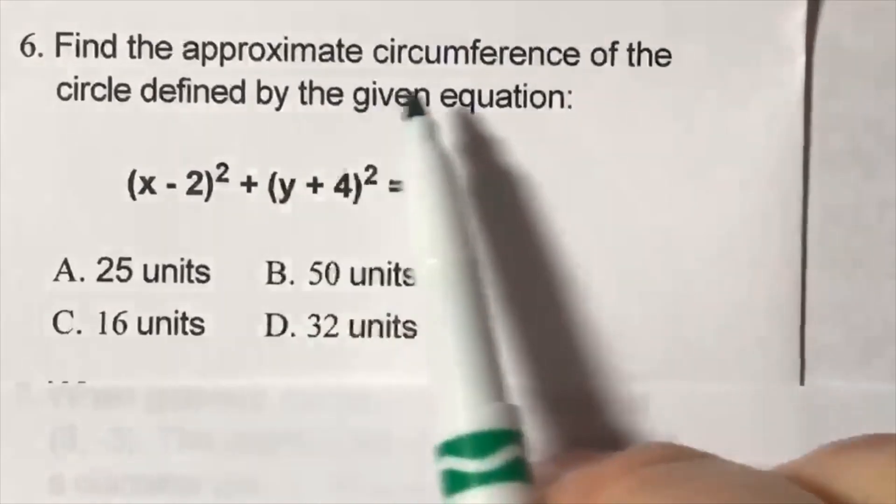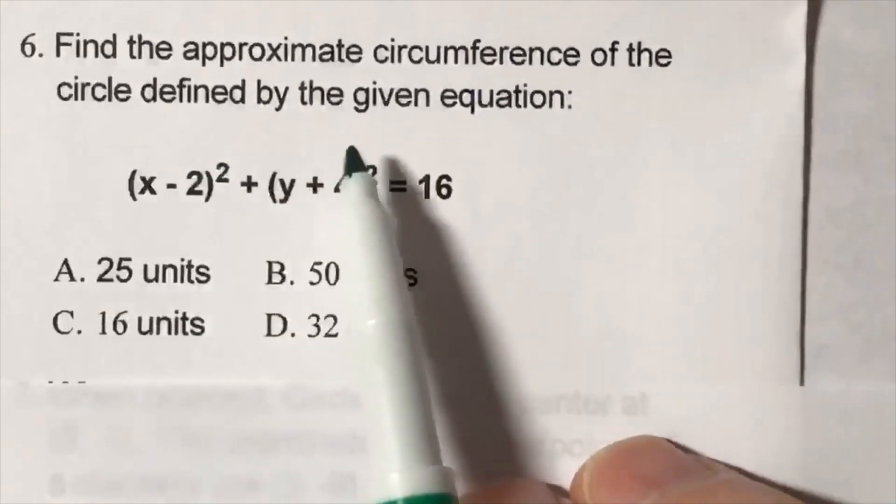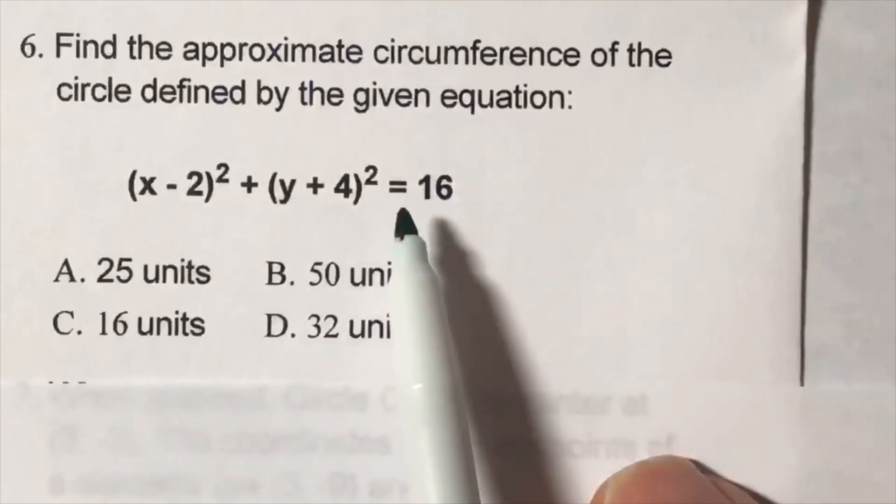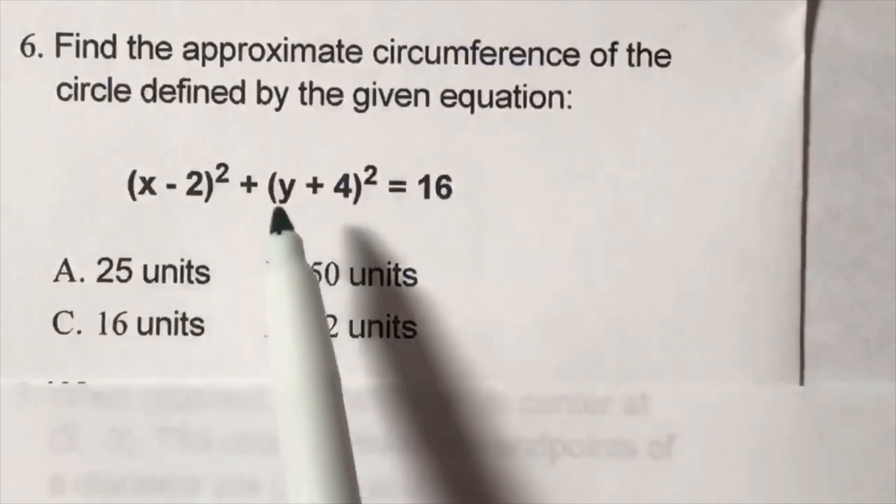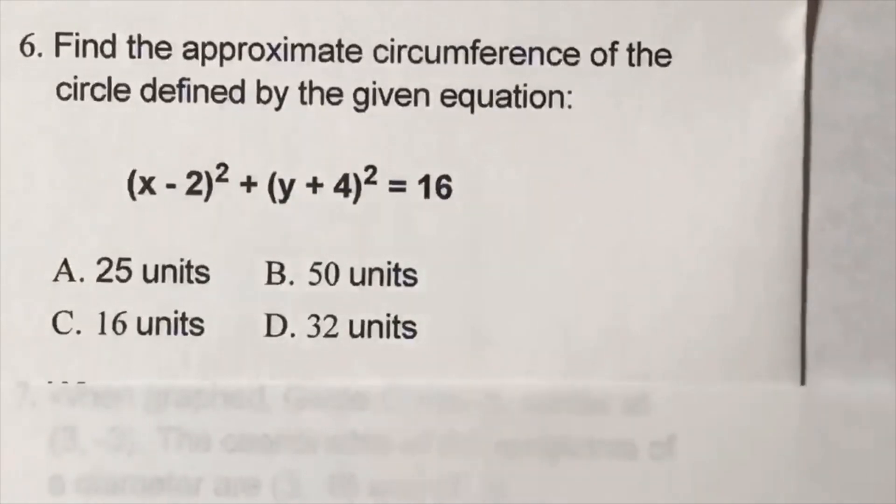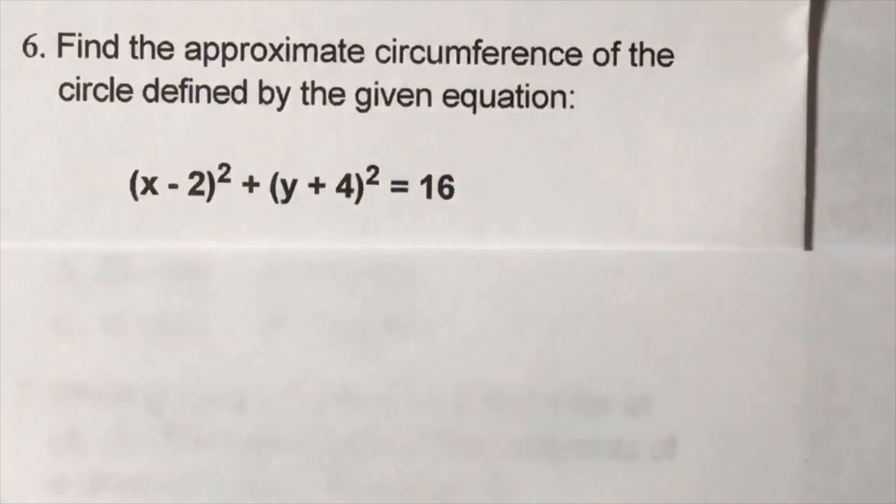Find the approximate circumference of the circle defined by the given equation. So we can find the radius, which is what's needed to find the circumference. Why do I know we need the radius? Because if you go to your formula chart...